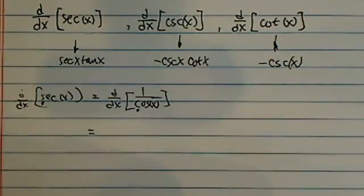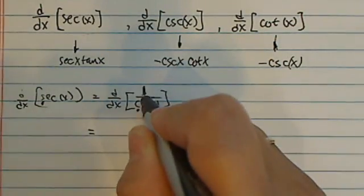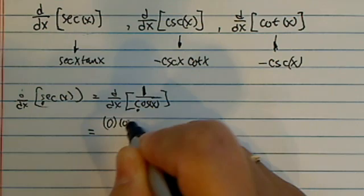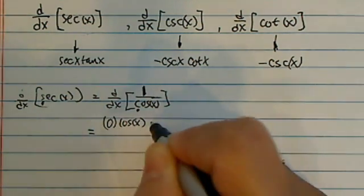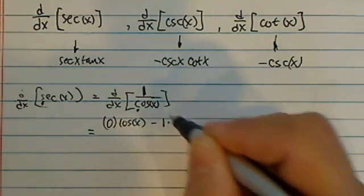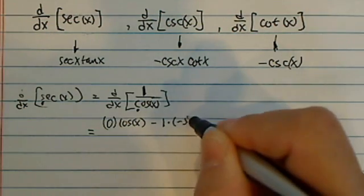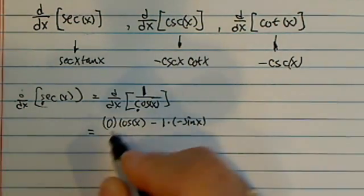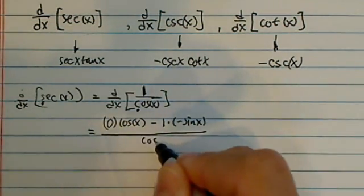Derivative of quotient rule says take the top derivative of the first one, which is 0, leave the second one alone, minus 1, leave the first one alone, times the derivative of the first one, divided by bottom squared.